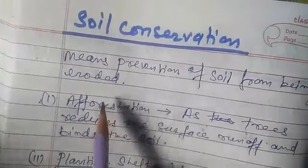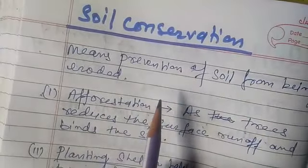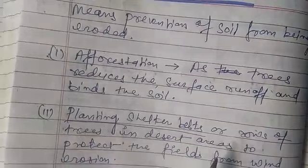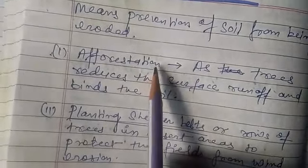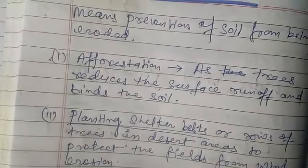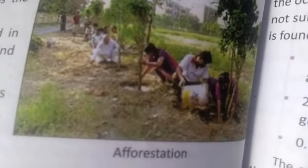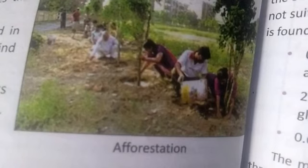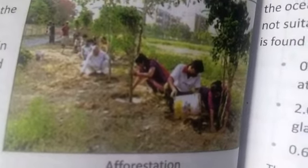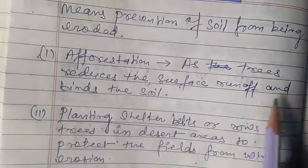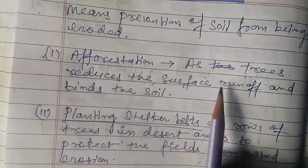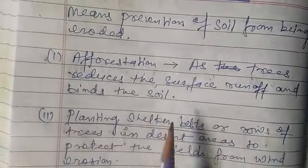Soil conservation means prevention of soil from being eroded. There are various methods by which we can prevent soil from being eroded. First is afforestation — planting more and more trees and seeds on the land. Trees reduce the surface runoff and bind the soil, so afforestation is important to conserve the soil.